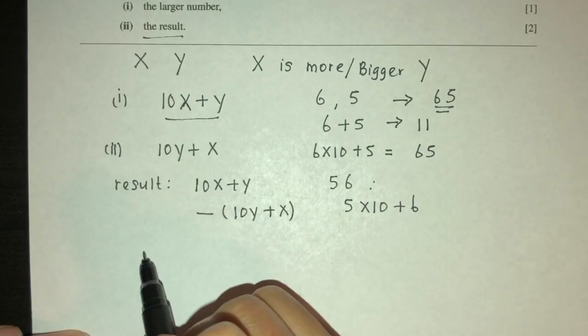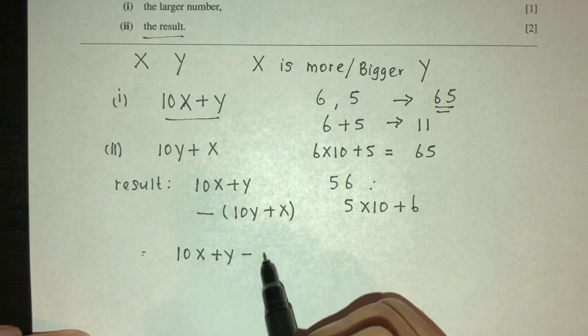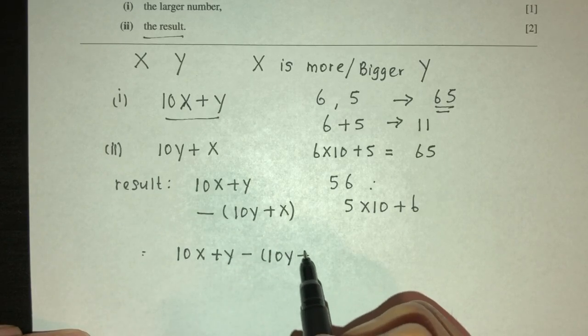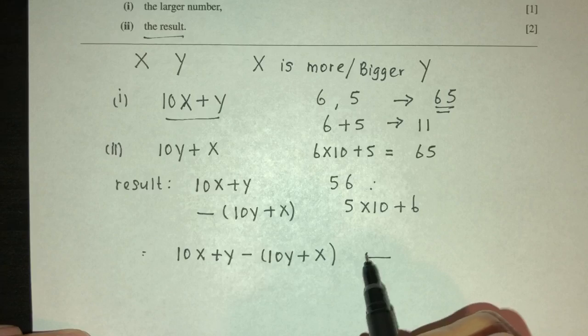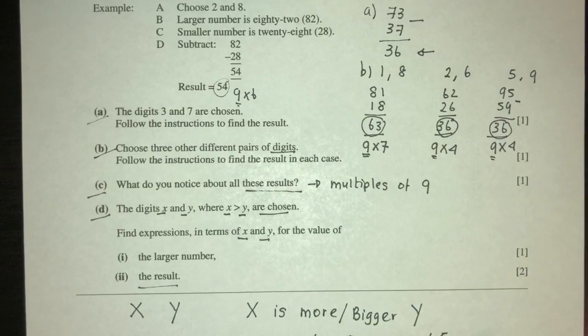So your answer will be 10x plus y minus, in brackets, 10y plus x. That will be your answer for part two, and this is that question.